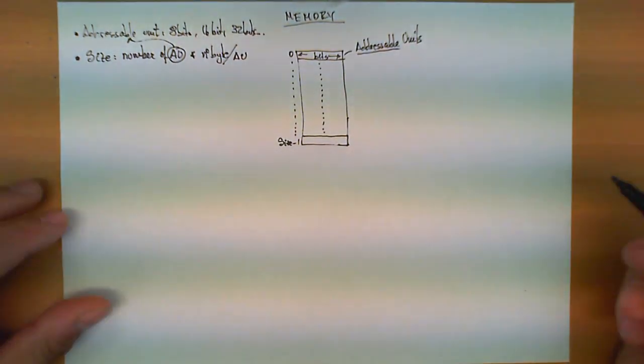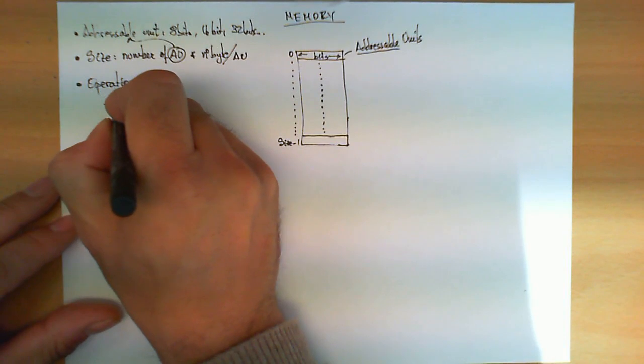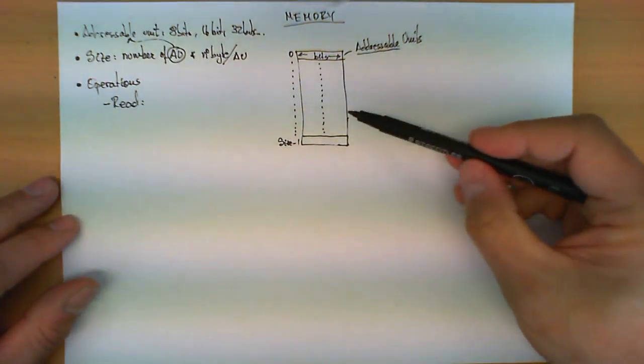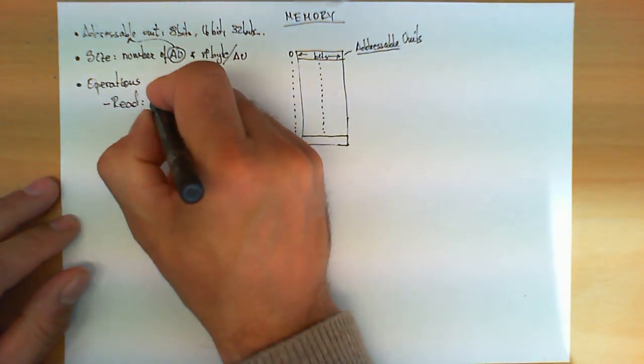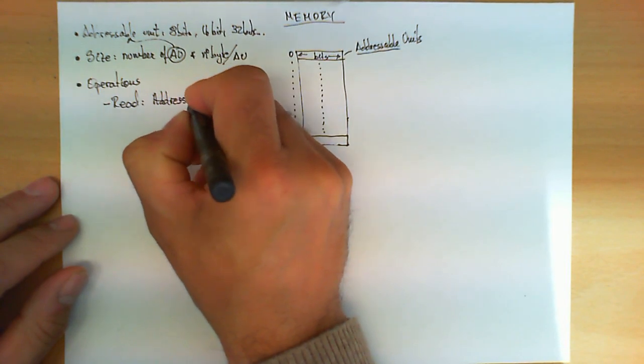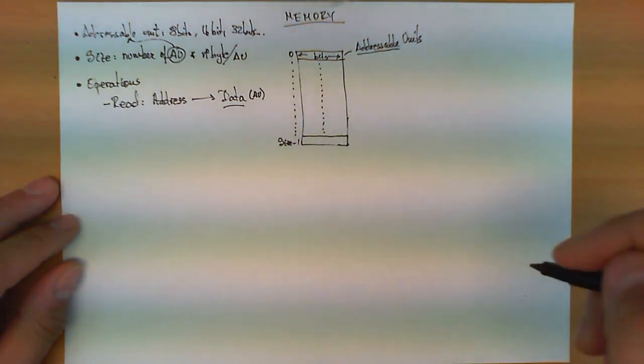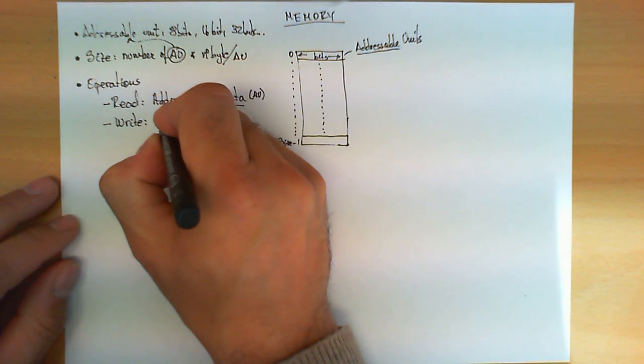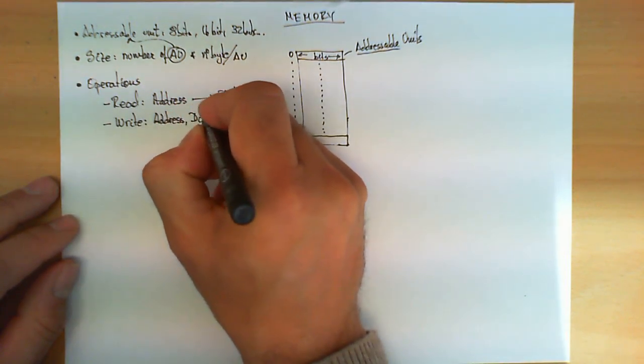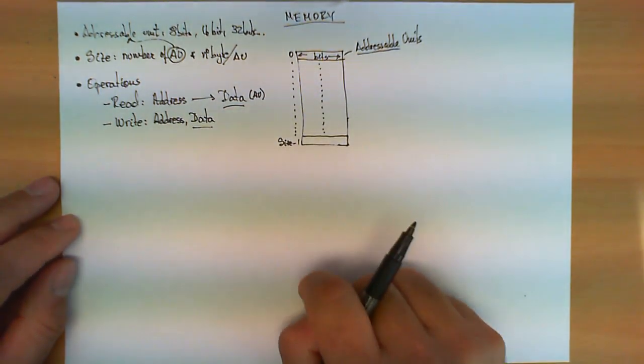This circuit can perform two operations, very intuitive. The first one is a read operation. A read operation consists on reading the content of one of these addressable units and return it as the output of this circuit. So what it needs is an address and returns data, an addressable unit. The second operation that this circuit is able to perform is a write operation. And this write operation, given an address and data, it guarantees that this data is stored in this addressable unit with the address given in the operation.